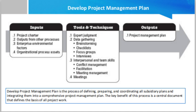The subsidiary project management plans could include the communication management plan, cost management plan, process improvement plan, procurement management plan, project scope management plan, quality management plan, risk management plan, schedule management plan, and staffing management plan. We can then move towards the inputs and outputs of this process.